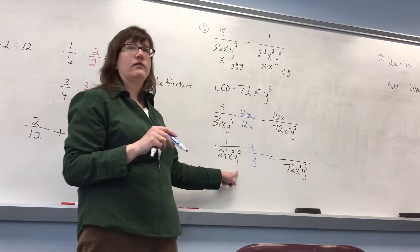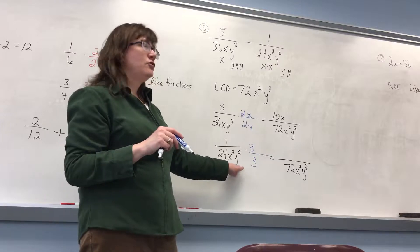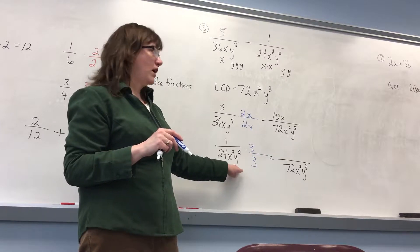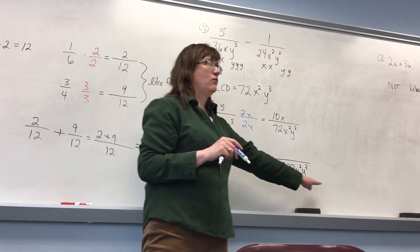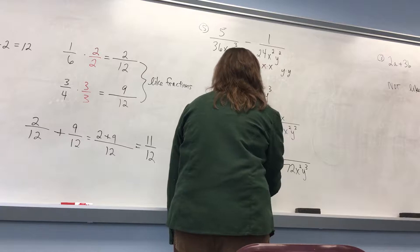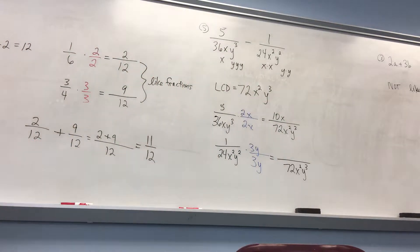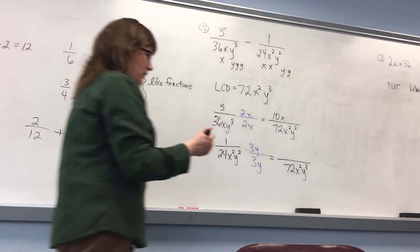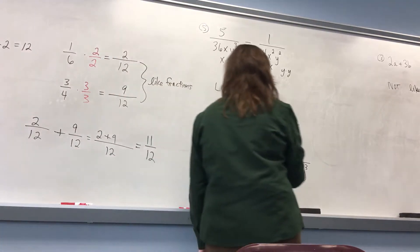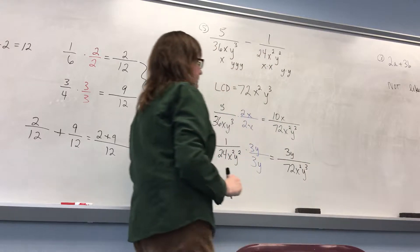Do I need any y's? Yeah — I only have y squared but I need y cubed, so I need one more y. So I'm going to multiply by 1 in the form of 3y over 3y. And then multiply across the top: 1 times 3y is 3y.